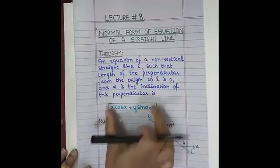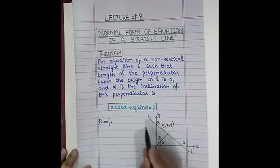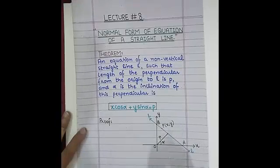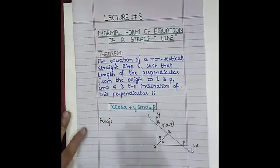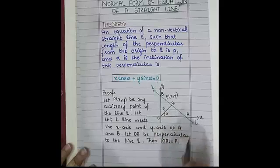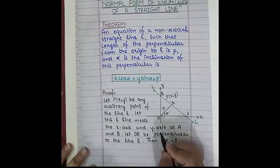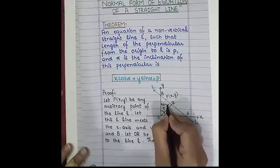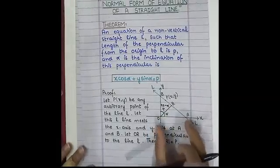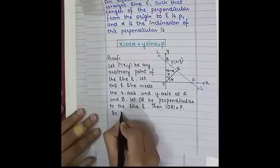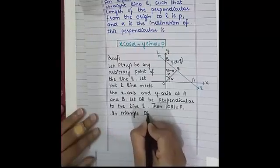With the help of this diagram we will derive this form. Let P be any arbitrary point on line L, and let A and B be the respective x-intercept and y-intercept of this line. OR equals P, the angle at R is 90 degrees, the inclination angle is alpha, so the remaining angle in triangle ORA must be 90 minus alpha. We consider two triangles: triangle ORA and triangle ORB.